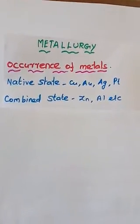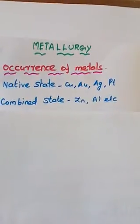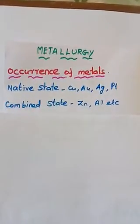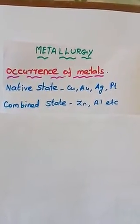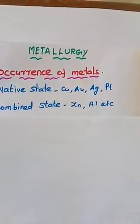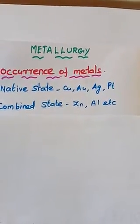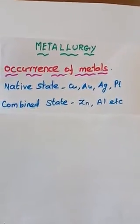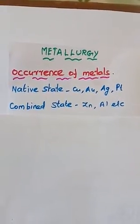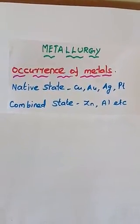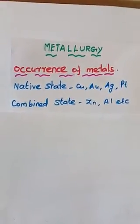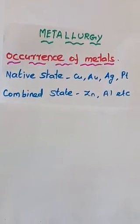In the combined state, some metals occur in ores by forming compounds. For example, zinc and aluminium are more reactive elements that combine with other elements such as oxygen and sulfur to form ores. So metals occur in two states: native state and combined state.